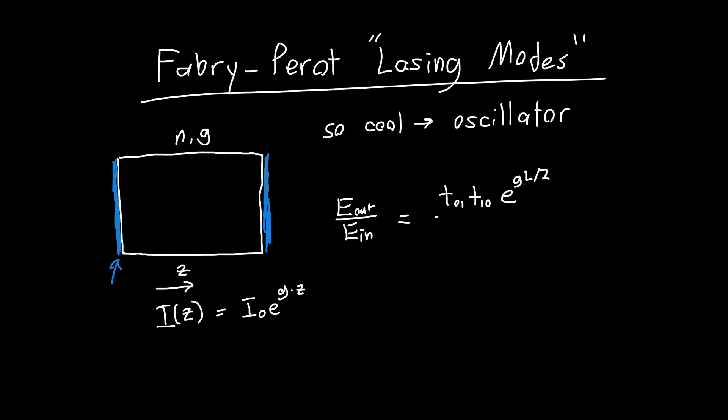And then this expression was divided by 1 minus r10, the reflection coefficient on the inside of the material. So this is material 1, and these are both material 0, squared e to the gl. But in deriving the expression, we ignored the phase.